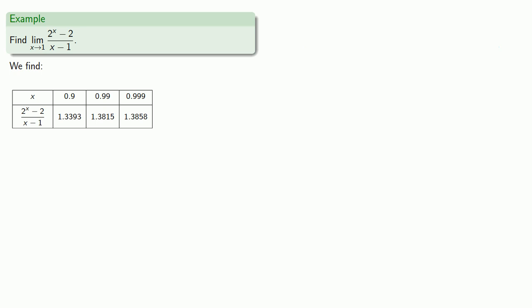So I'll pick a value of x close to 1, how about 1.1, and I'll evaluate our expression. And we get approximately 1.4355. Again, we don't like generalizing from one example, so I'll pick another value close to 1, how about 1.01.